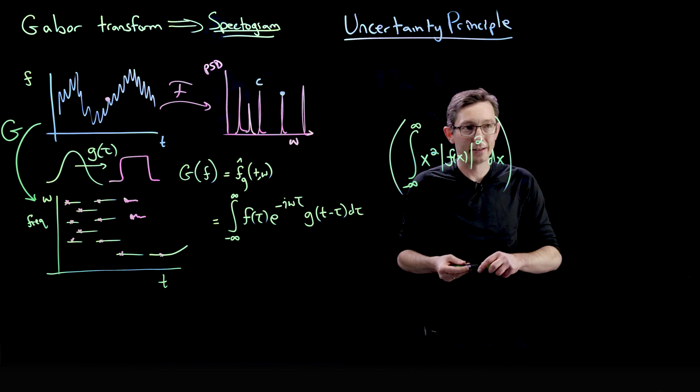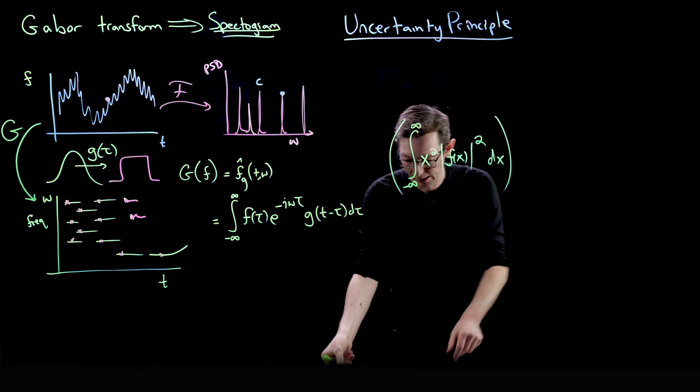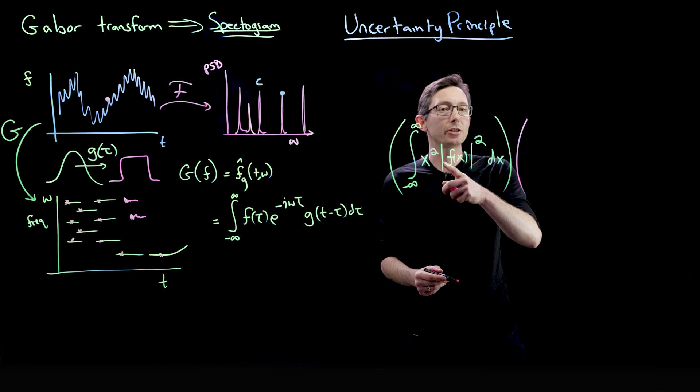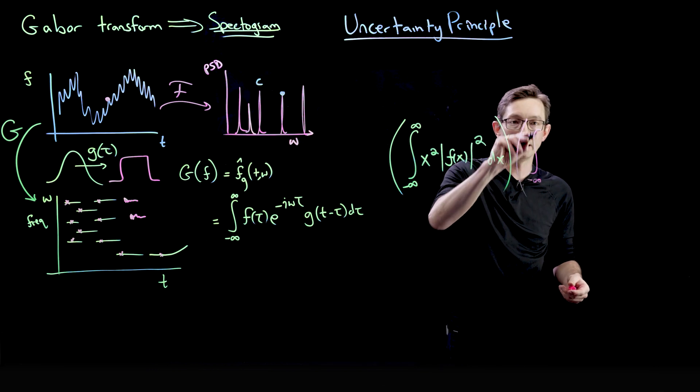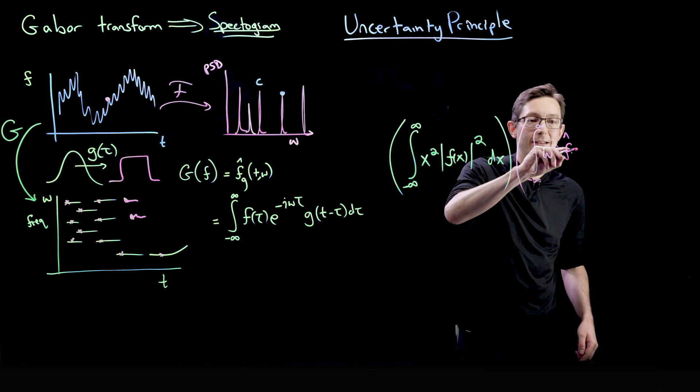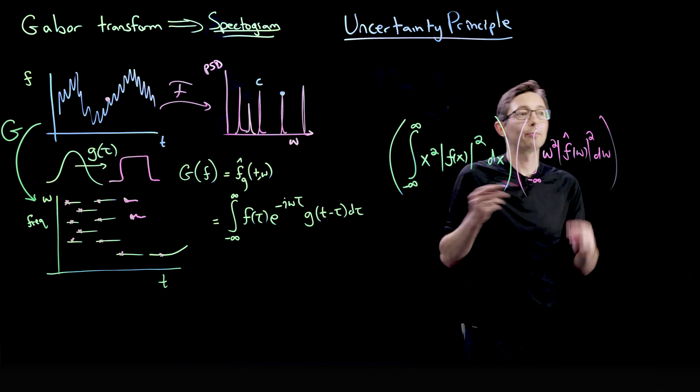And if I multiply that, so this is some measure of my function in space. And if I multiply that by the same measure but of its Fourier transform. So here I'm going to integrate from negative infinity to infinity of omega squared f hat of omega magnitude squared d omega. I'm going to multiply that.